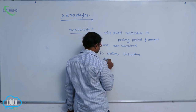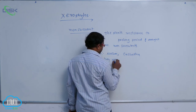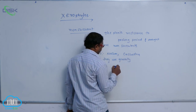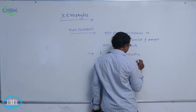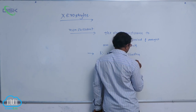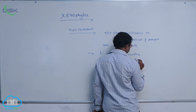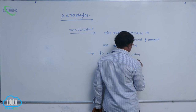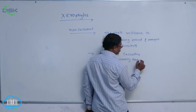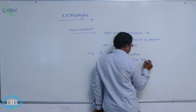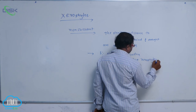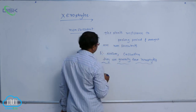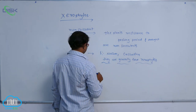They are generally xerophytes. Examples include Nerium and Casuarina.